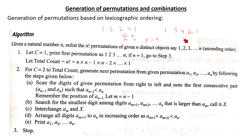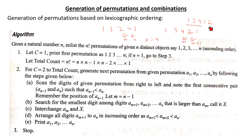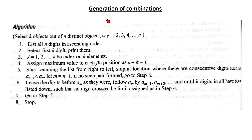Interchange a_m and x, giving 1, 3, 4, 2, 1. Now arrange all digits from position m+1 onward in increasing order: a_{m+1} < a_{m+2} < ... < a_n. So the result is 1, 3, 4, 1, 2. This is the next permutation. Similarly, we can also generate combinations.